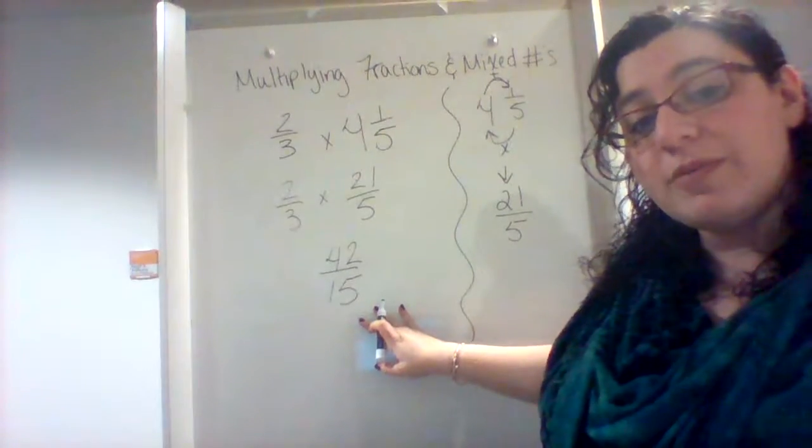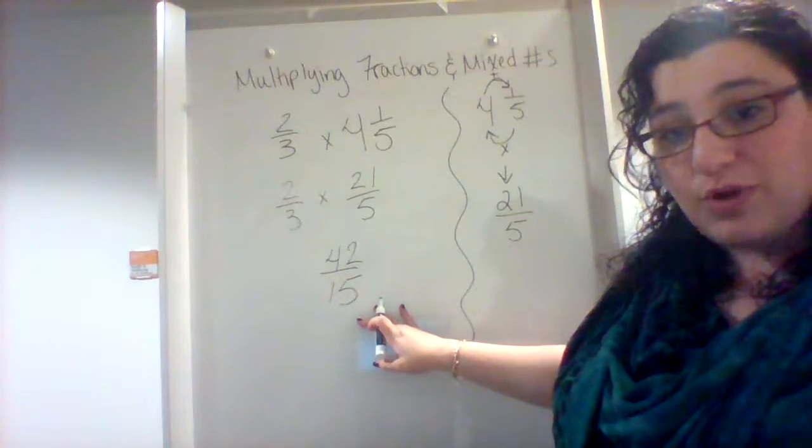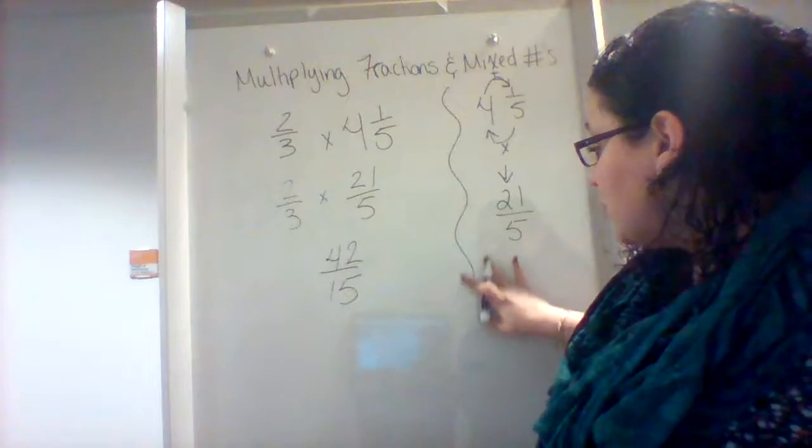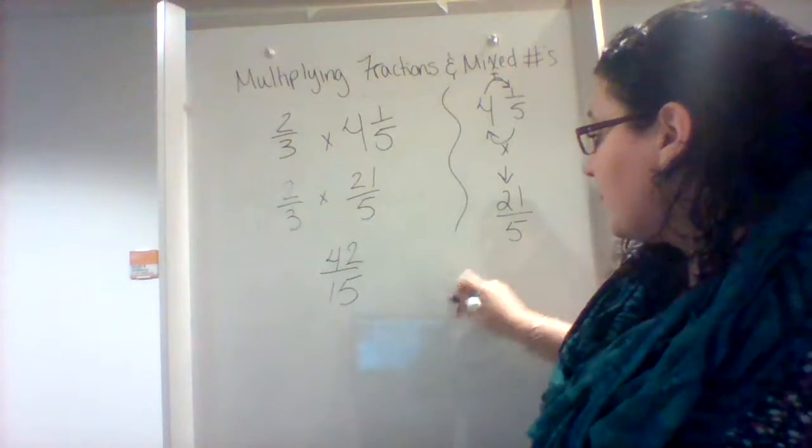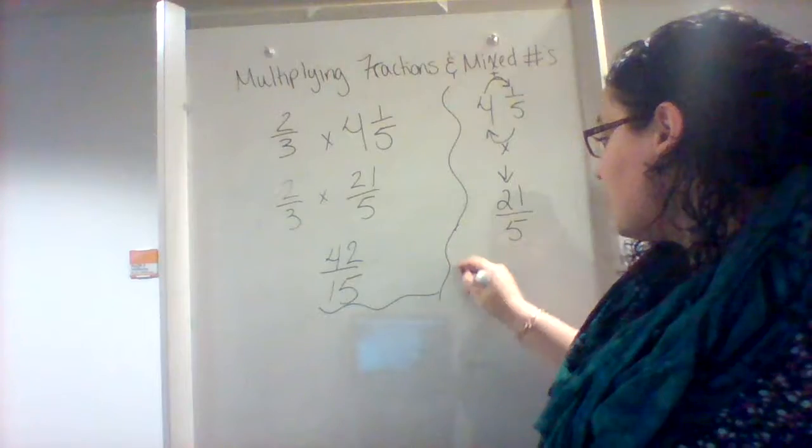But remember, this is an improper fraction, so you cannot leave it as an improper fraction, which means I'm going to change it back into a mixed number. And I can do this through division.